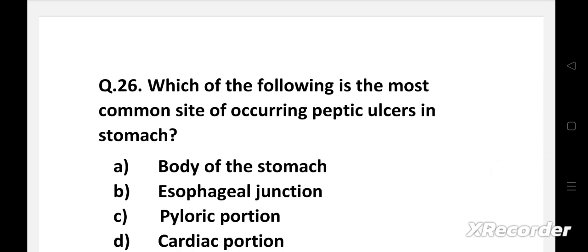Question 26: Which of the following is the most common site of occurring peptic ulcers in the stomach? Option A: body of the stomach, B: esophageal junction, C: pyloric portion, D: cardiac portion.